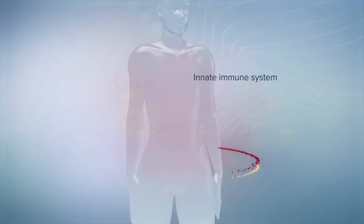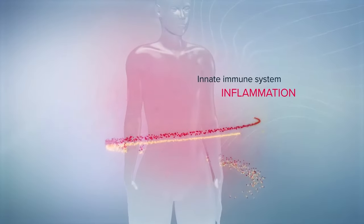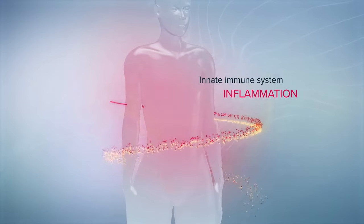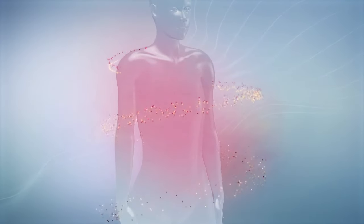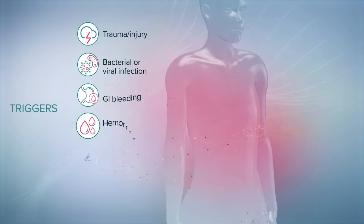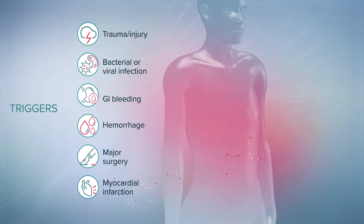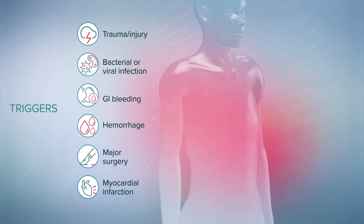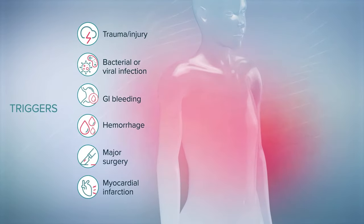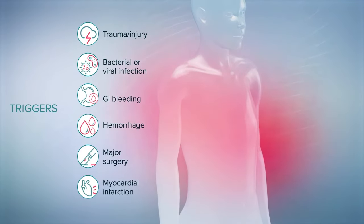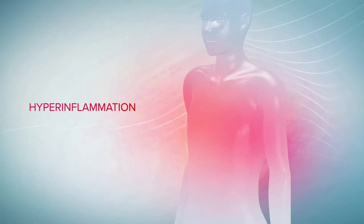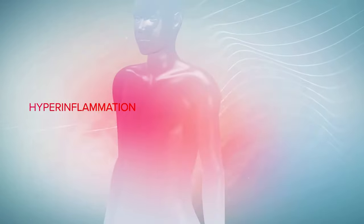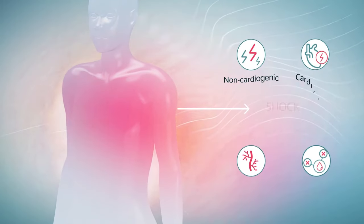The innate immune system is the first response to signals from damaged tissue or invasive pathogens. However, a wide variety of triggers, including trauma, injury, bacterial or viral infection, and major surgery can increase the likelihood of a harmful, imbalanced systemic response, known as hyperinflammation, leading to shock.